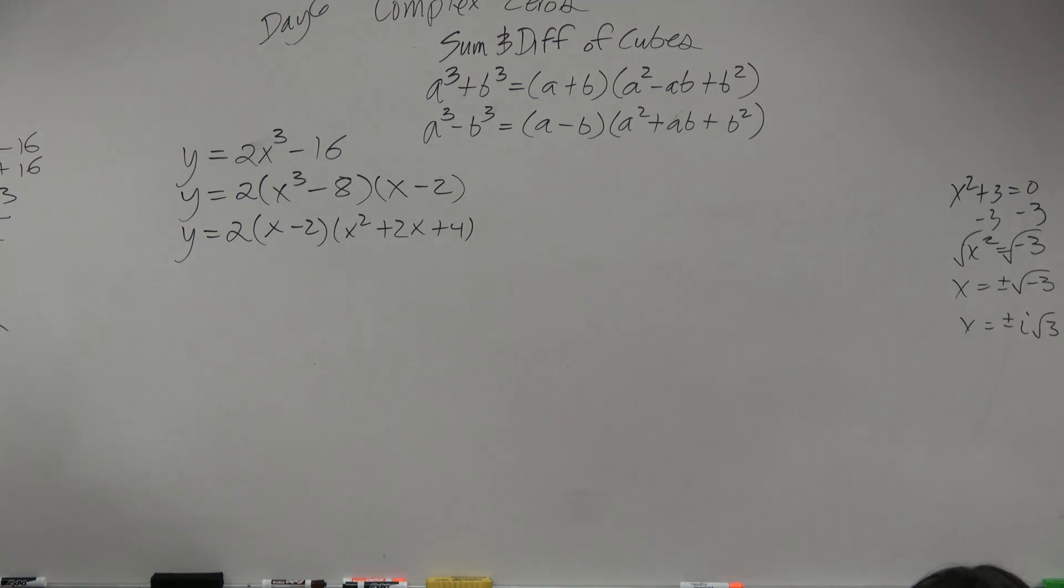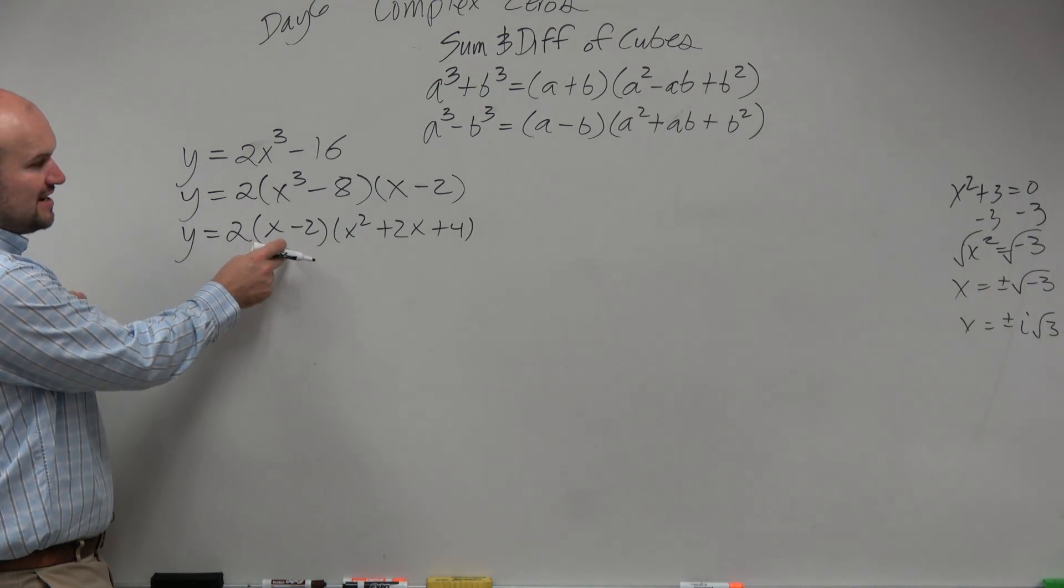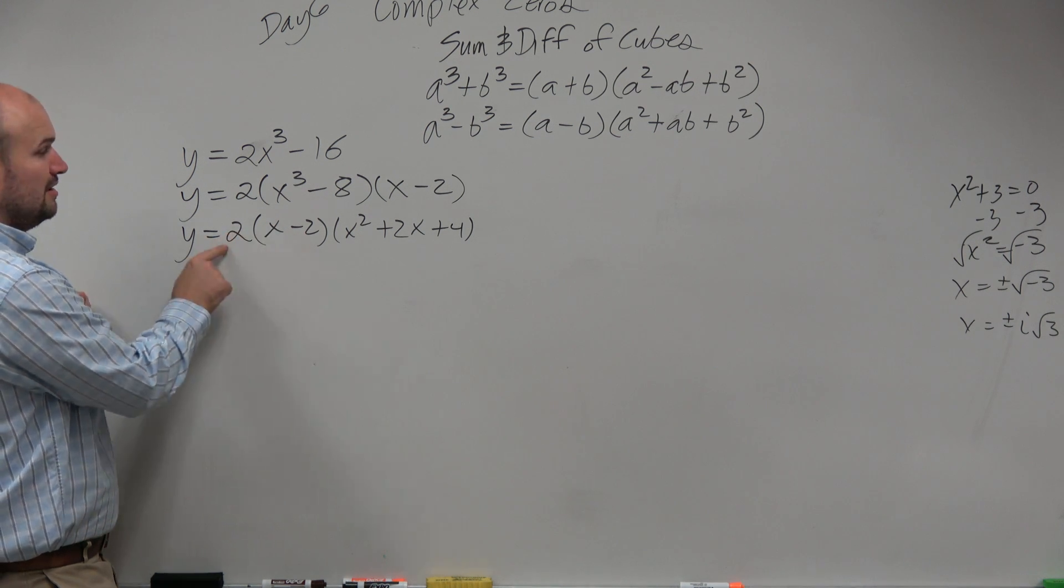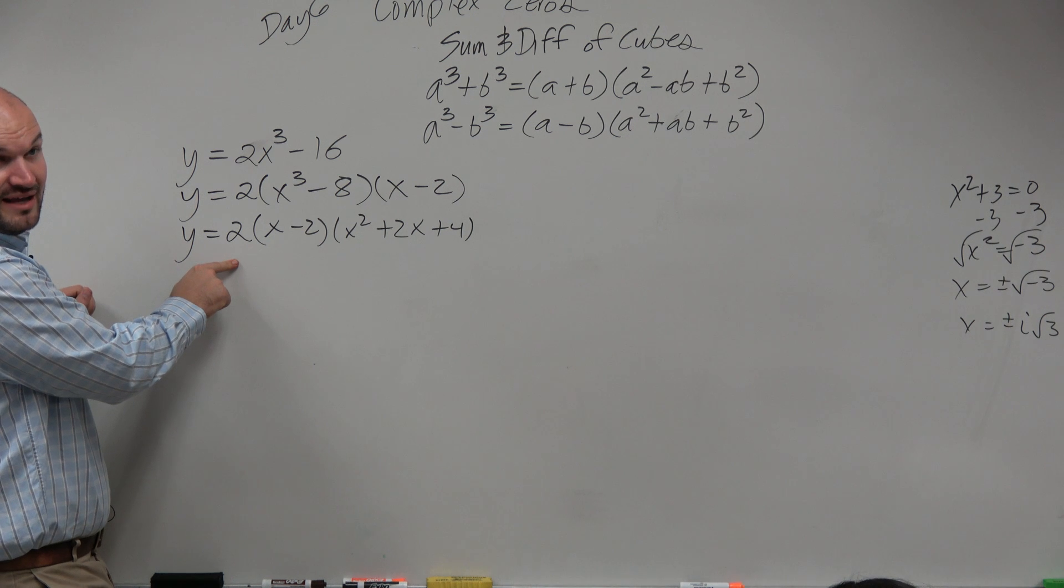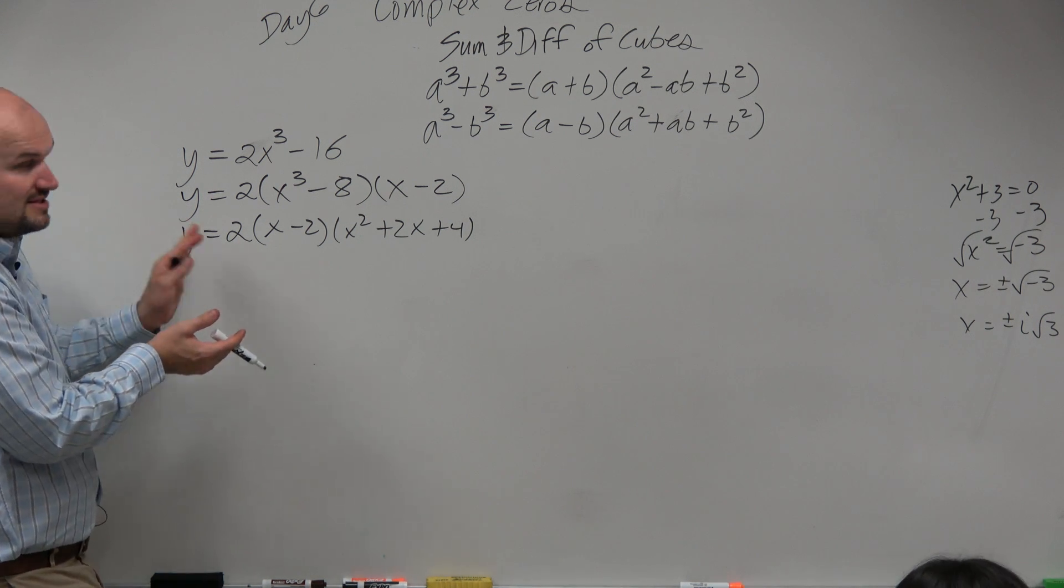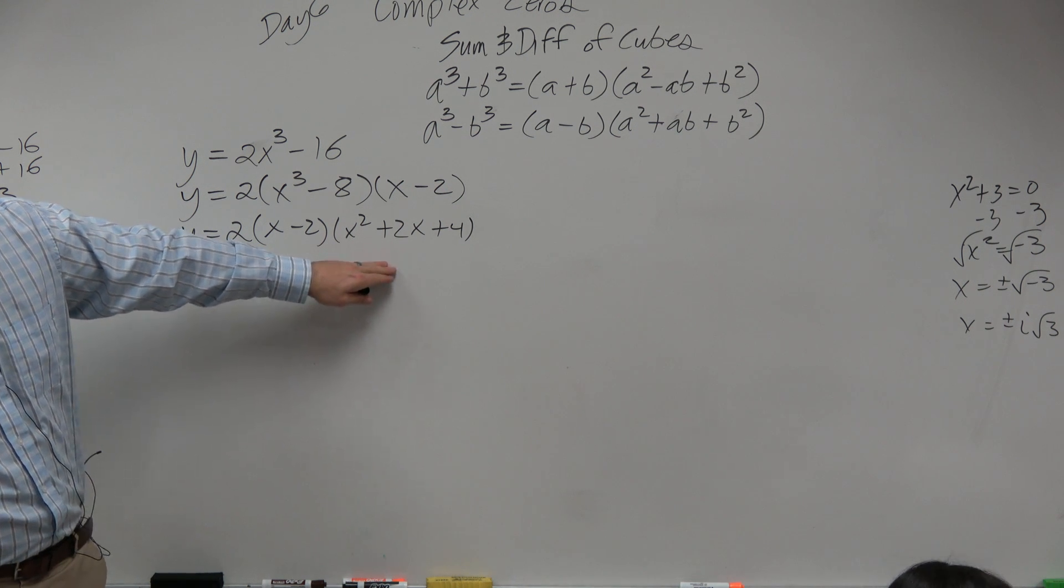All right, so now when we're looking into this, we know we can find this 0, right? This is linear factored form, so we know that 0 is 2. This is not a 0. This is just a factor, right? That's just vertically stretching the graph. That's not a 0. But here, we need to factor this further down, right?